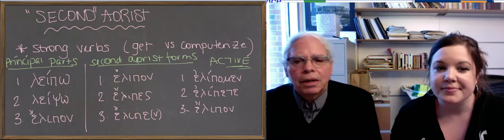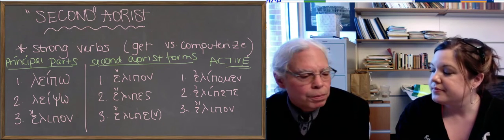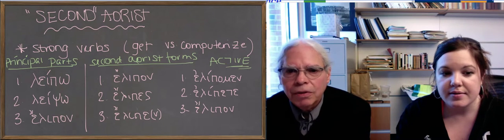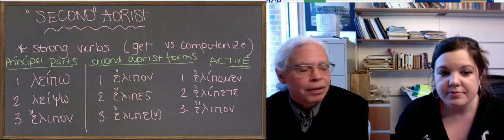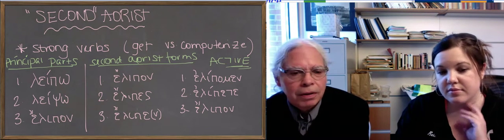This is unit 7. We're talking about the concept and the forms of the second aorist. So all the aorists that we've learned so far are the S-A aorists, in which that sequence S-A is the sign of the aorist as we've talked about it.